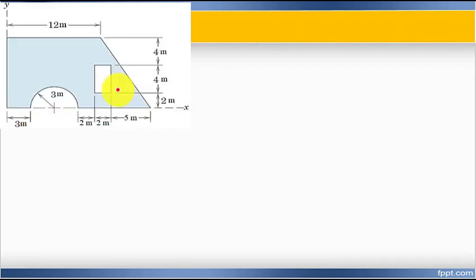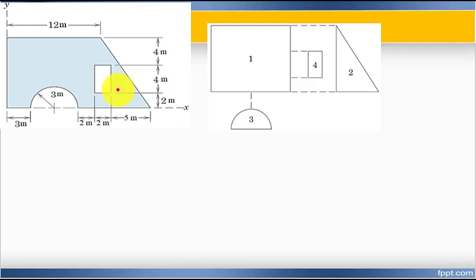To tackle this kind of problem, the first step is to divide this composite shape into known simpler shapes. Shape number one is a rectangle, a fully shaded rectangle.